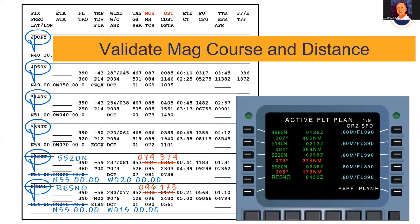We take that information from ForeFlight and place it on our master document. In red — just to highlight it — we've taken the mag course and distance from that independent flight planning provider and compare it to what the FMS calculated. When they match, we have confirmation that the FMS did the right thing. This is a required step as stated in the Advisory Circular.